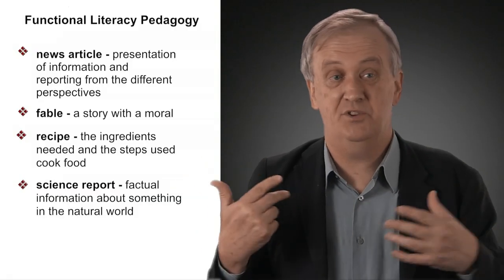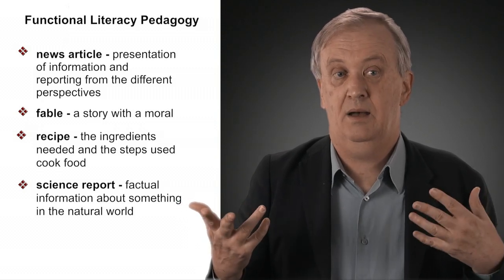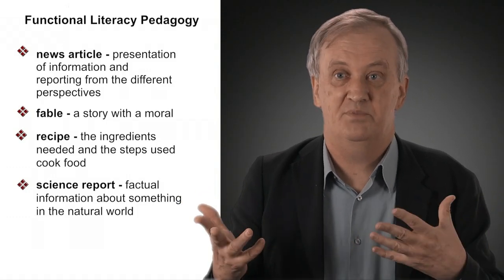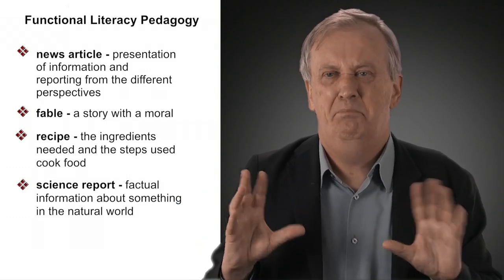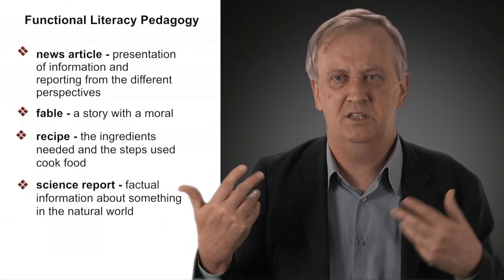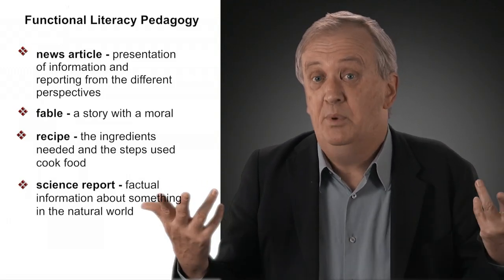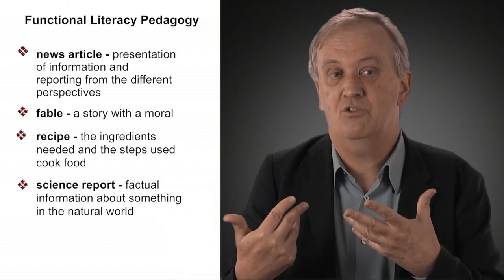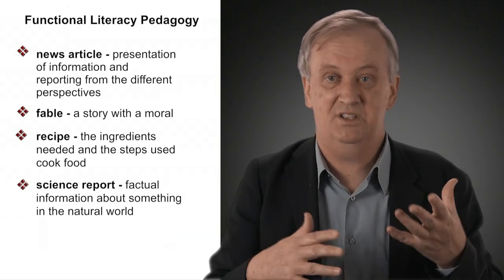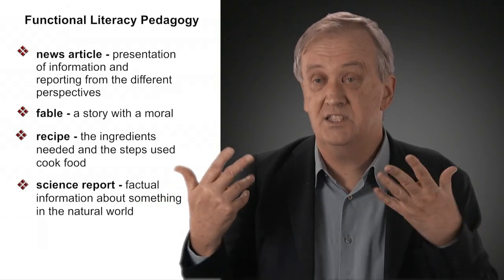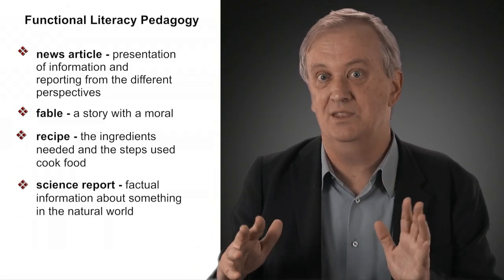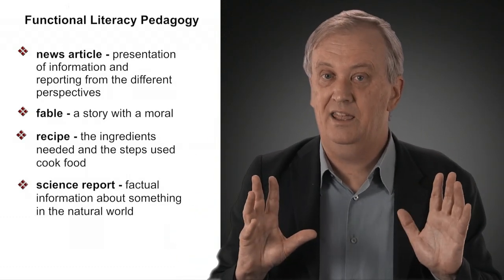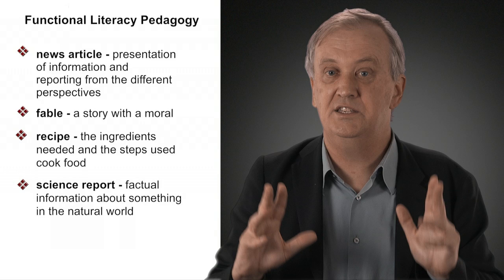Here are some examples of different types of texts. A news article presents information and often reports from different perspectives to give a balanced view of what's happening in the world. A fable is a story that has a moral. A recipe is a list of ingredients and steps required to produce a particular item of cooking. A science report might be factual information about something in the world which is useful in your job or learning. These are incredibly different kinds of written text.